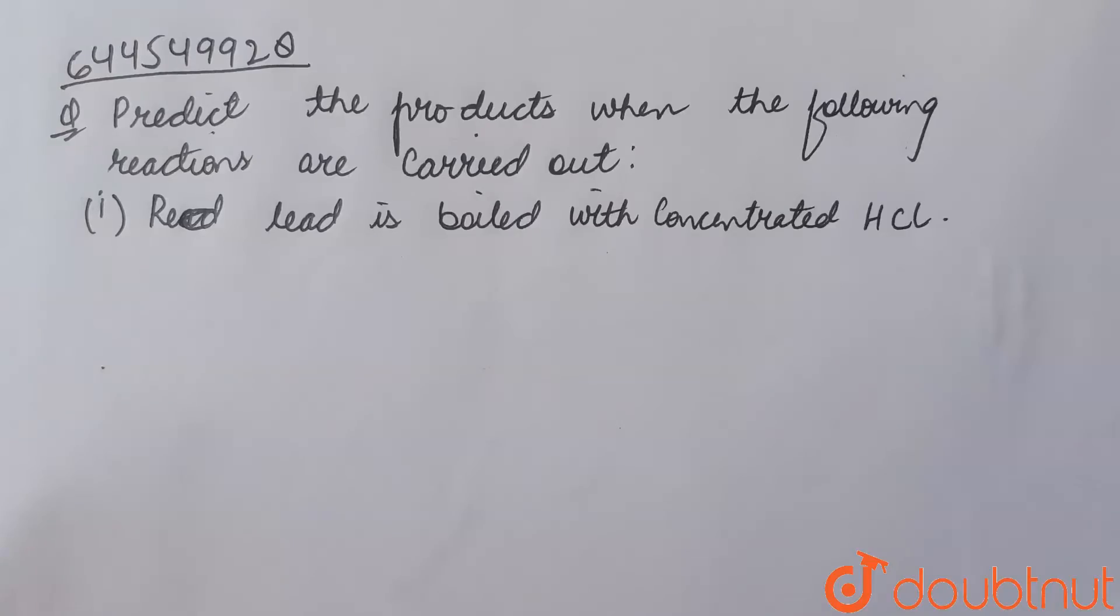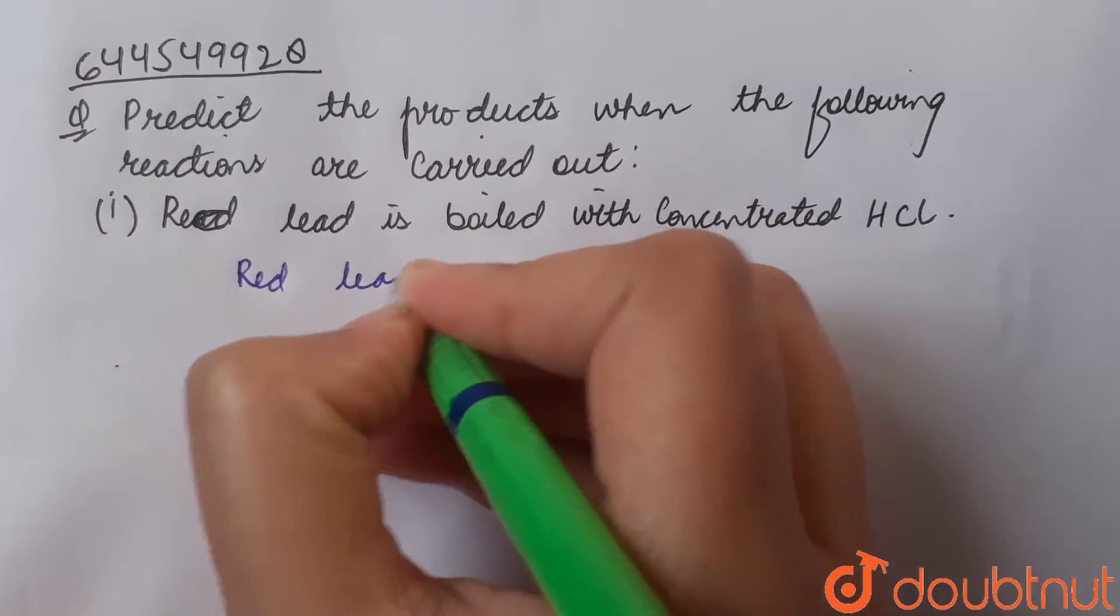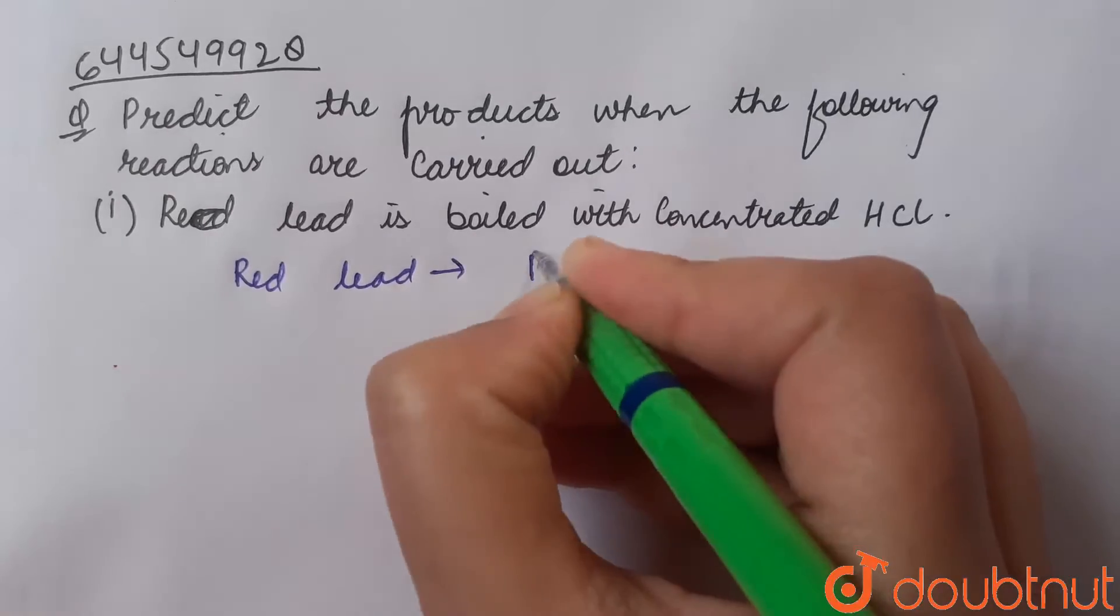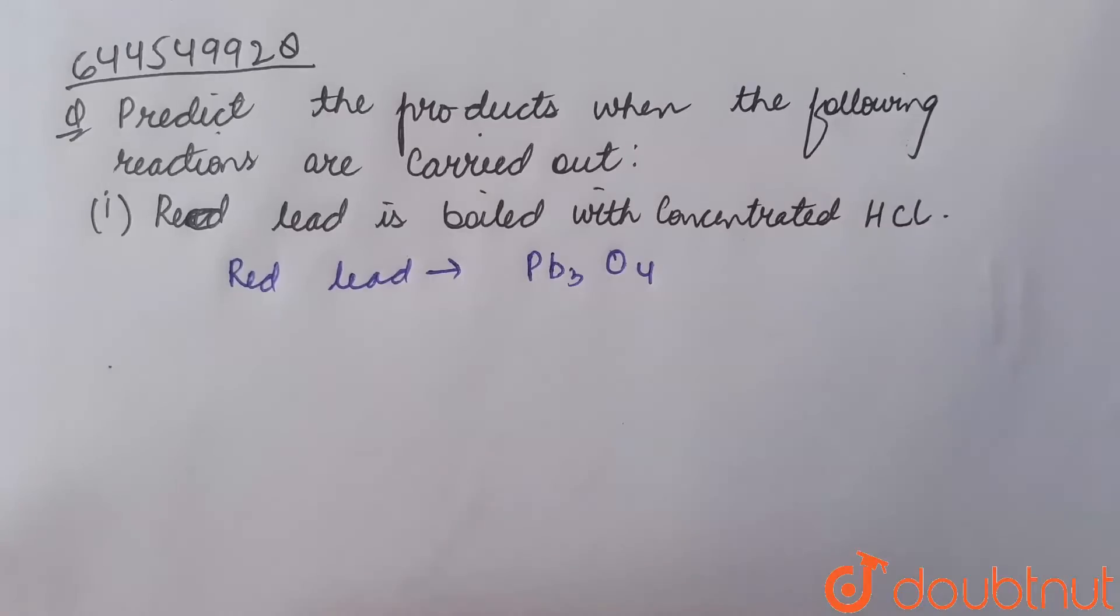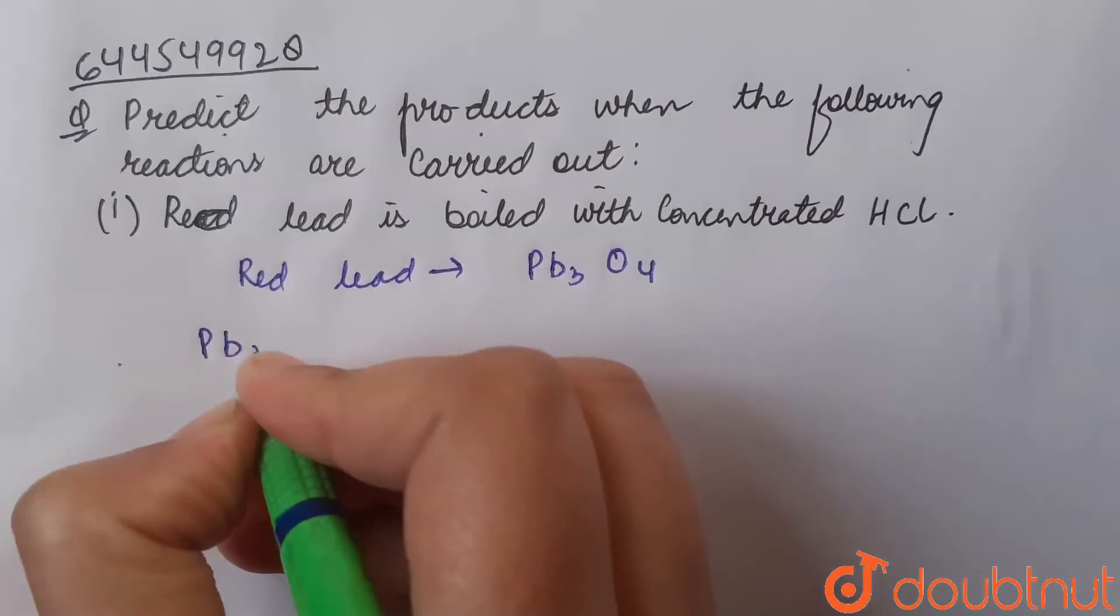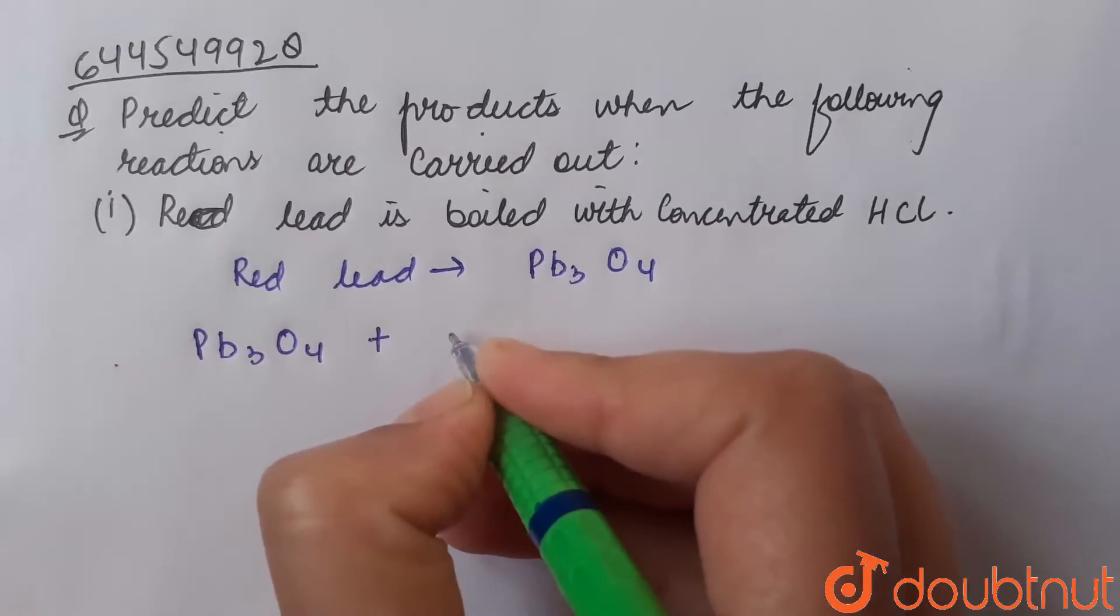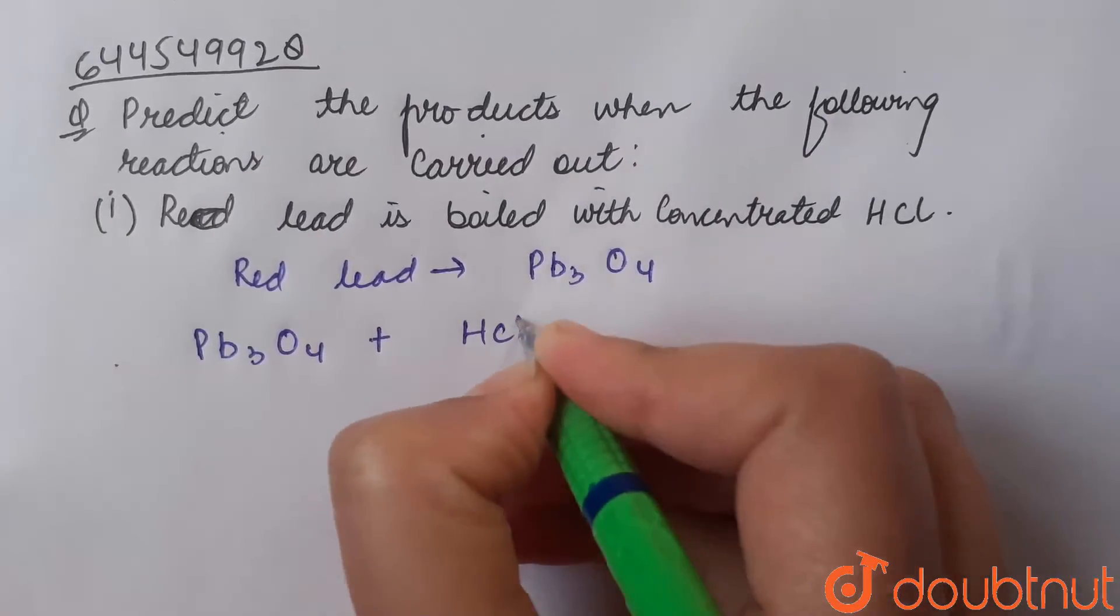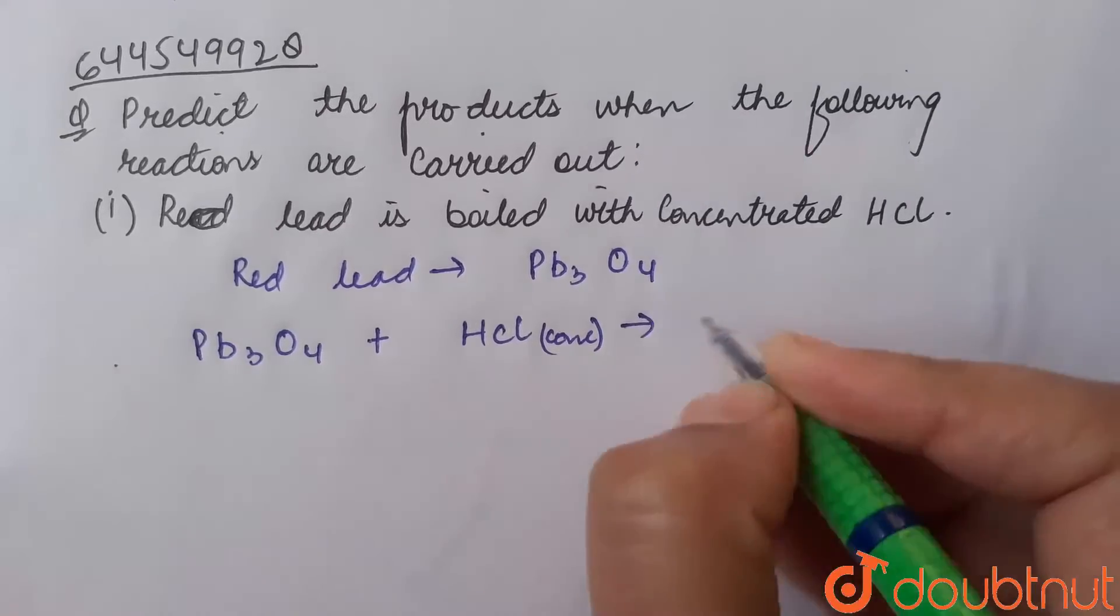Red lead is Pb3O4. When red lead, that is Pb3O4, is boiled with concentrated hydrochloric acid HCl concentrated, it gives lead chloride.